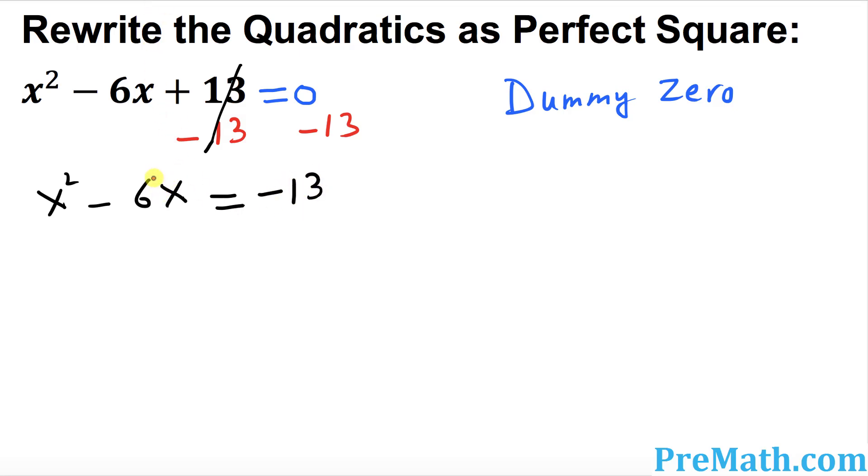The next step, I want you to focus on this number, the coefficient of x which is 6. Just disregard this negative sign. I'm going to put down 6. I want you to take the half of that one, so you divide it by 2. That's going to give you 3, and then finally take the square of 3. I want you to add this 3 squared on both sides of this equal sign. Let's go ahead and do the next step.